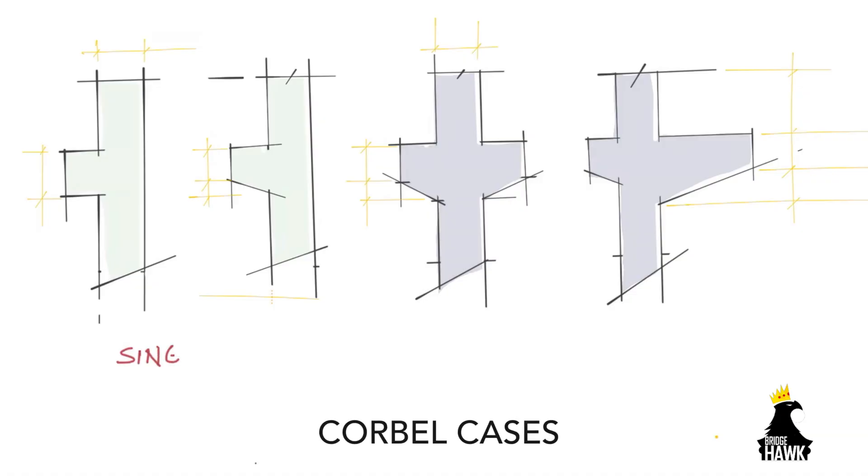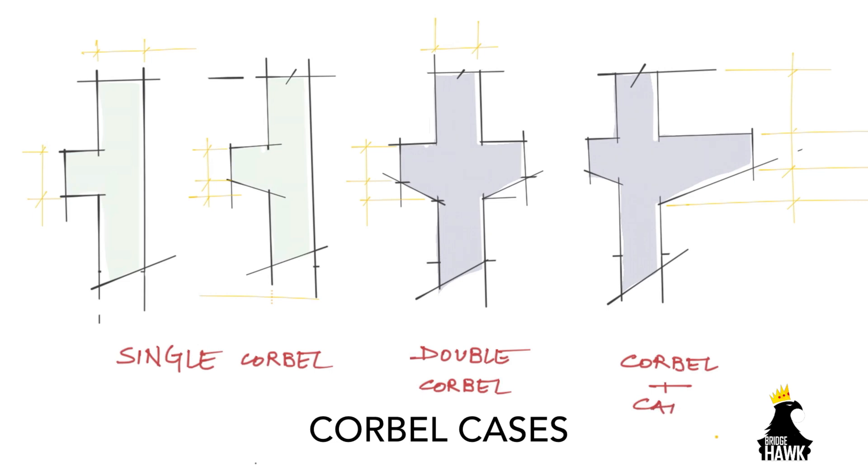There are different types of corbels as shown in the illustration. Single corbels can be rectangular or trapezoidal in section.